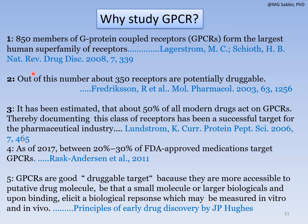Key arguments for studying GPCRs: approximately 850 members form the biggest human superfamily of receptors; about 350 of these are potentially druggable; it has been estimated that about 50 percent of all modern drugs act on GPCRs; as of 2017, between 20 to 30 percent of FDA-approved medications target GPCRs; and GPCRs are good druggable targets because they are accessible to small molecules or large biologicals, and upon binding they elicit a measurable biological response both in vivo and in vitro.